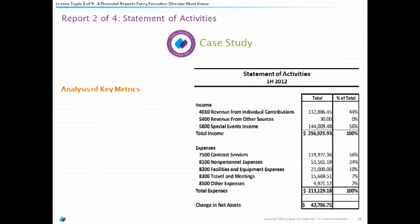Back to our JATASA Justice example — you look at their revenue: individual contributions of $112,000 and special events at $144,000. Perhaps not as diverse as you might like. You could ask whether there's an opportunity to pursue grant funding, though there are different views on that. Their special events income is really high as a percent of total revenue, which might make the organization a little nervous if those events don't sustain that momentum.